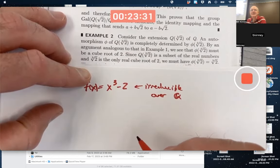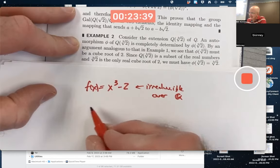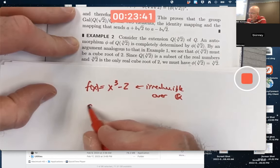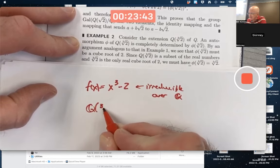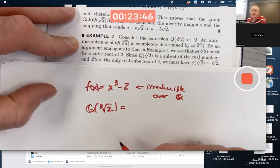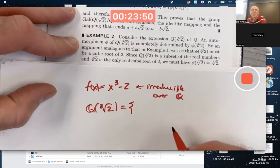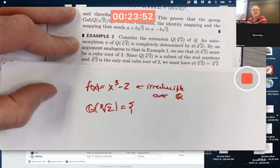You can apply Eisenstein's criterion with p equal to 2 to verify that. It's degree 3, therefore we know that this is a three-dimensional vector space over the rationals and would have 1, cube root of 2, and cube root of 2 squared as a basis.